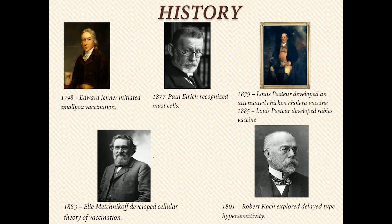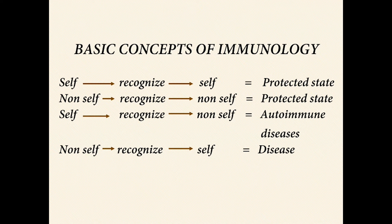History: In 1798, Edward Jenner initiated smallpox vaccination. In 1877, Paul Ehrlich recognized mast cells. In 1879, Louis Pasteur developed an attenuated chicken cholera vaccine. In 1883, Elie Metchnikov developed the cellular theory of immunity. In 1885, Louis Pasteur developed the rabies vaccine. In 1891, Robert Koch explored delayed-type hypersensitivity.